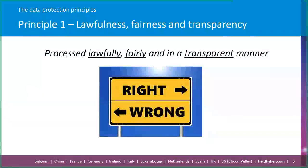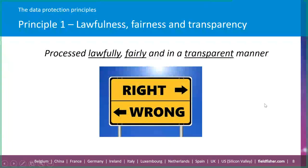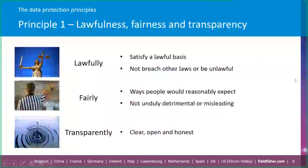Principle one requires that personal data is processed lawfully, fairly and in a transparent manner. There are three quite distinct limbs to this principle, but fundamentally it's all about using personal data in the right way, in an ethical way, and in a way which respects individuals' human rights. Let's turn to each of these limbs in a little more detail.